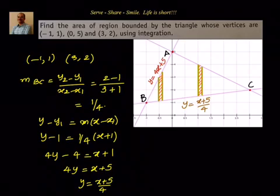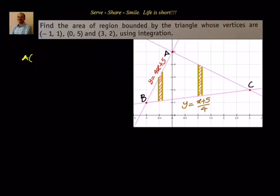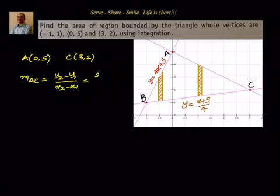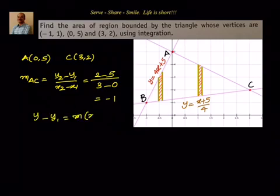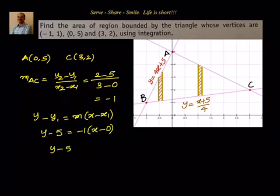Now for line AC: A = (0, 5) and C = (3, 2). The slope m equals (2 - 5)/(3 - 0) = -3/3 = -1. Using point-slope form: y - 5 = -1(x - 0), so y - 5 = -x, giving y = 5 - x.